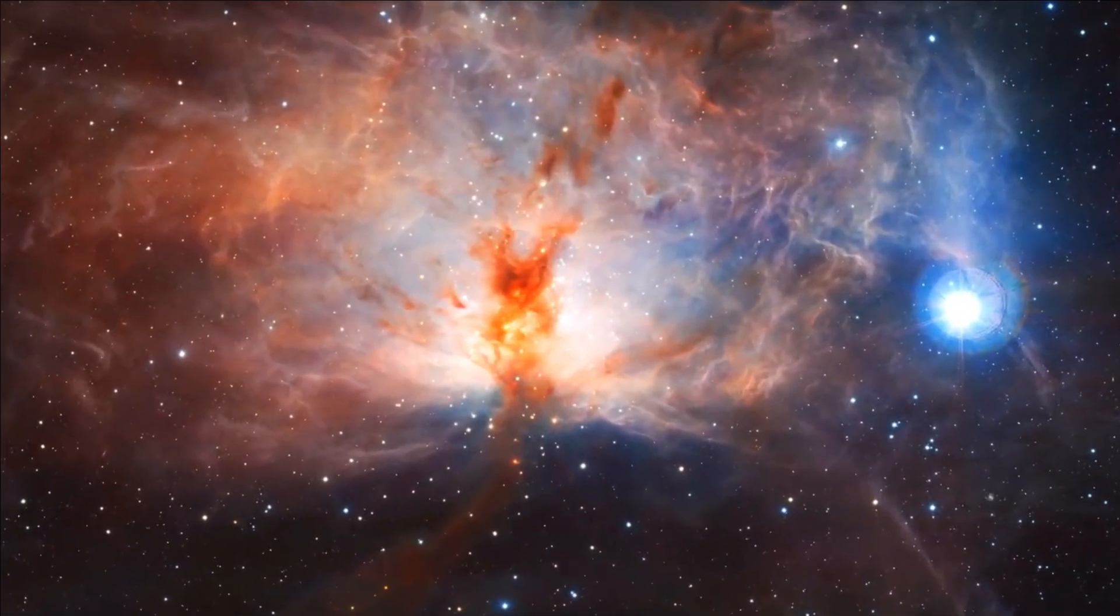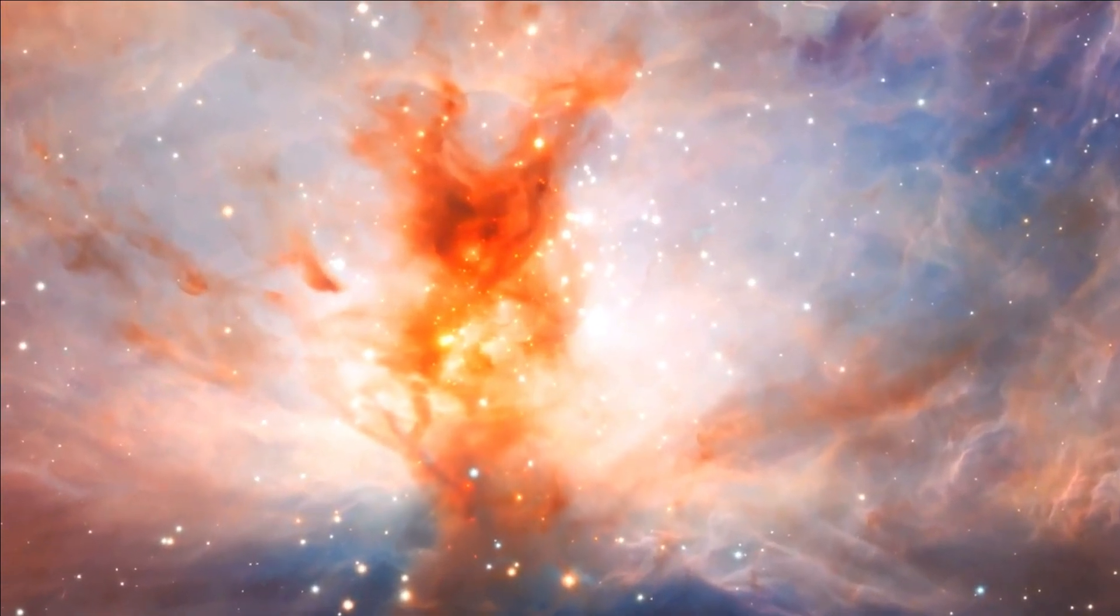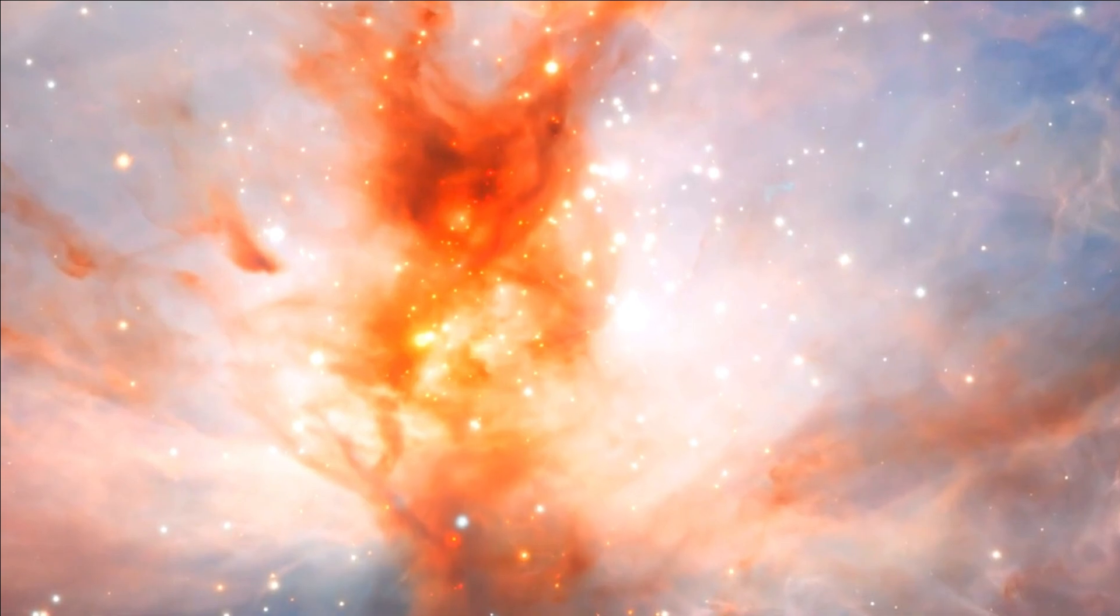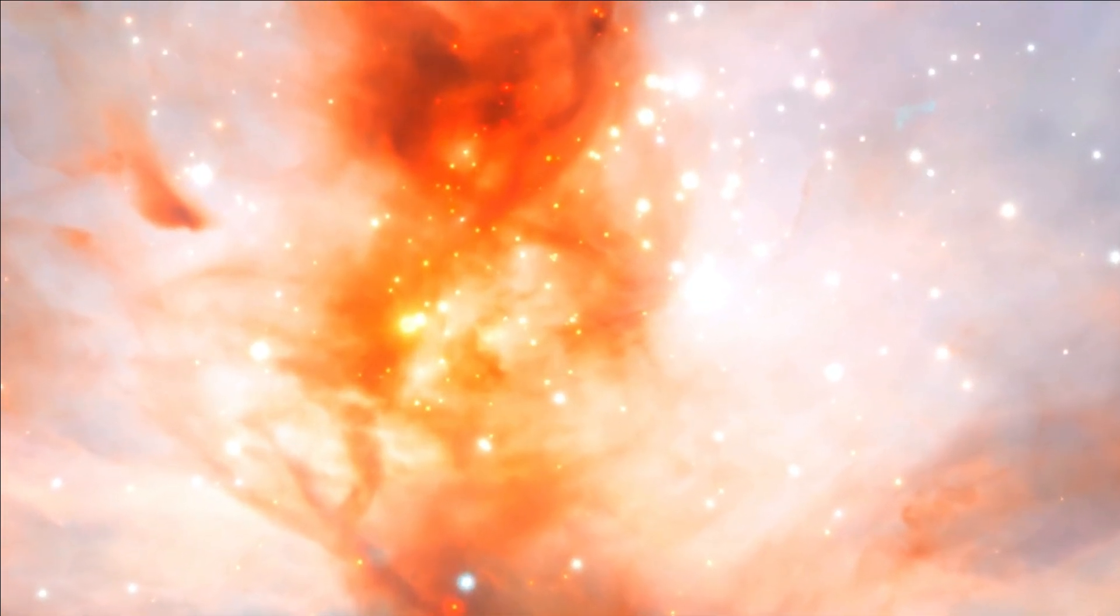HIP 65426-b, significantly dimmer than its star by about 10,000 times, stands out due to its orbit, which is 100 times farther from its star than Earth orbits the Sun.